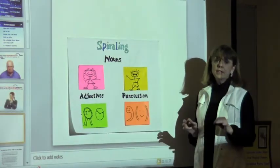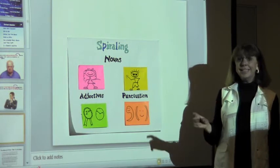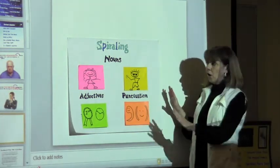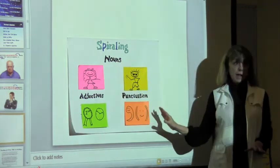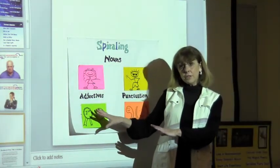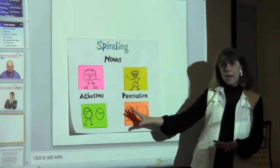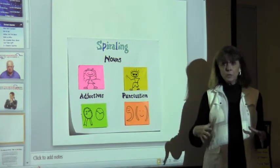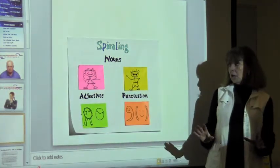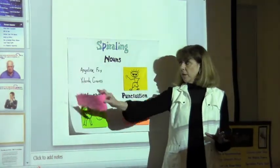One of the things that separates the Common Core State Standards from other state standards is its emphasis on spiraling. So let's say three weeks ago we were working with proper nouns, two weeks ago with hyphenated adjectives, and last week we concentrated on commas and parentheses. This week we're going to bring them all together in a single piece of writing.